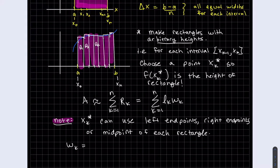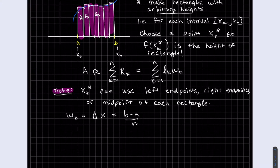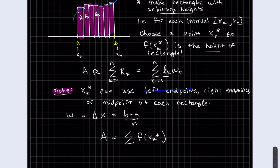The width is delta x, which equals (b minus a) over n — all widths are equal, so we don't need a counter on it. The height is f(x_k*), which is our left endpoint, right endpoint, or midpoint value. So our area is the sum from k equals 1 to n of f(x_k*) times delta x.